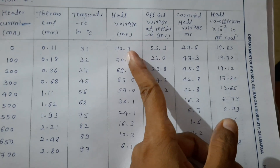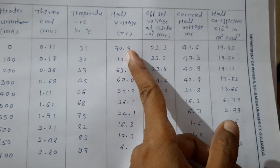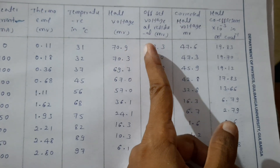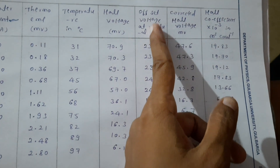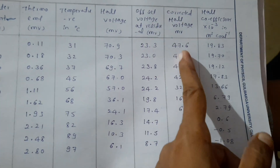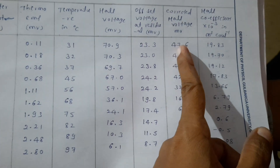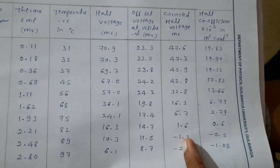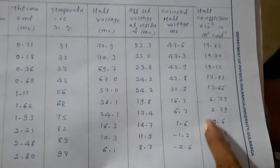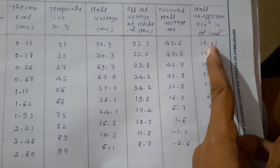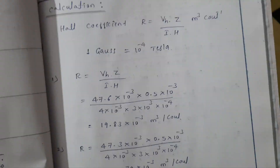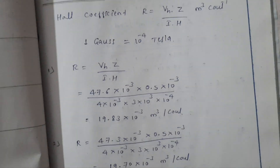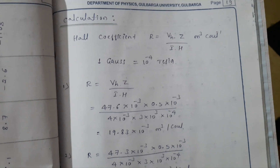You have to subtract the offset voltage from the Hall voltage — this gives the corrected Hall voltage, which you write in this column. The Hall coefficient can then be calculated with the help of the formula. Here are the calculations for the Hall coefficient.